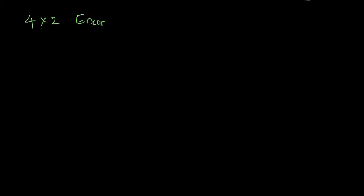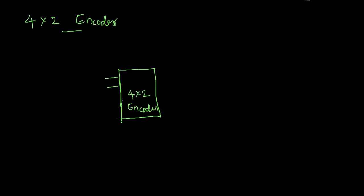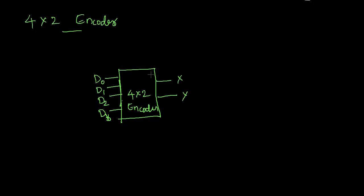First we will discuss the 4-by-2 encoder. We can draw the block diagram: a 4-by-2 encoder has 4 input data lines and 2 output lines. We can denote the input data lines as d0, d1, d2, and d3, and the output lines as x and y. We can write the truth table for this encoder. At a time, only one bit will be high.